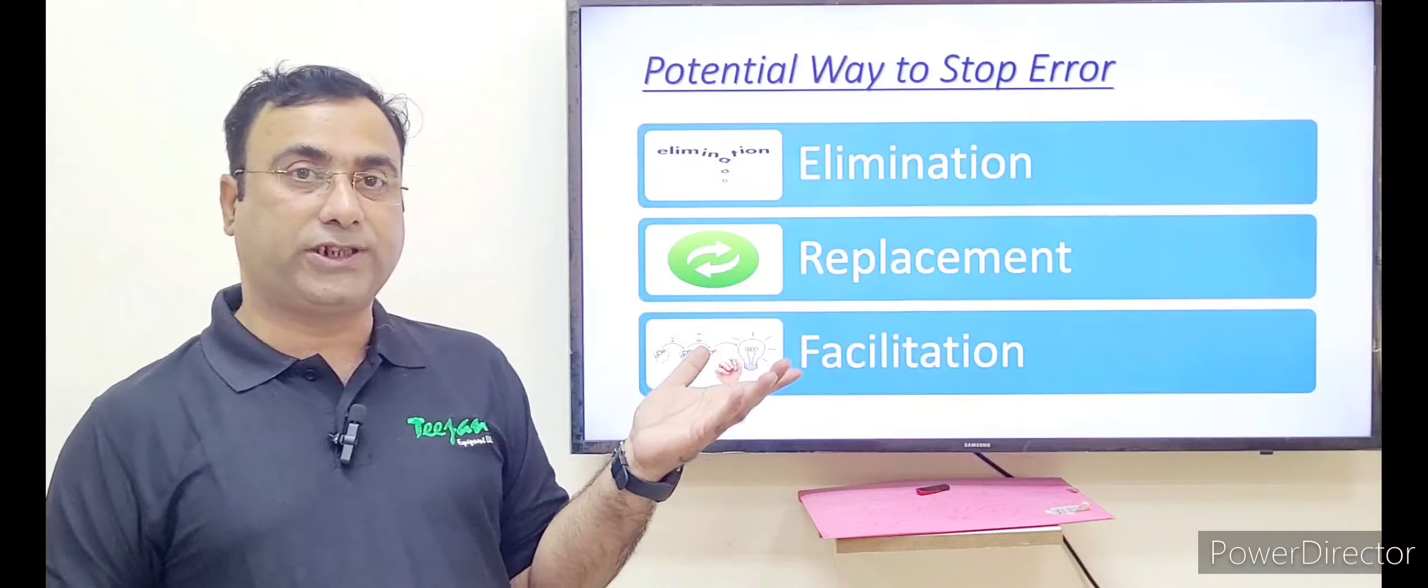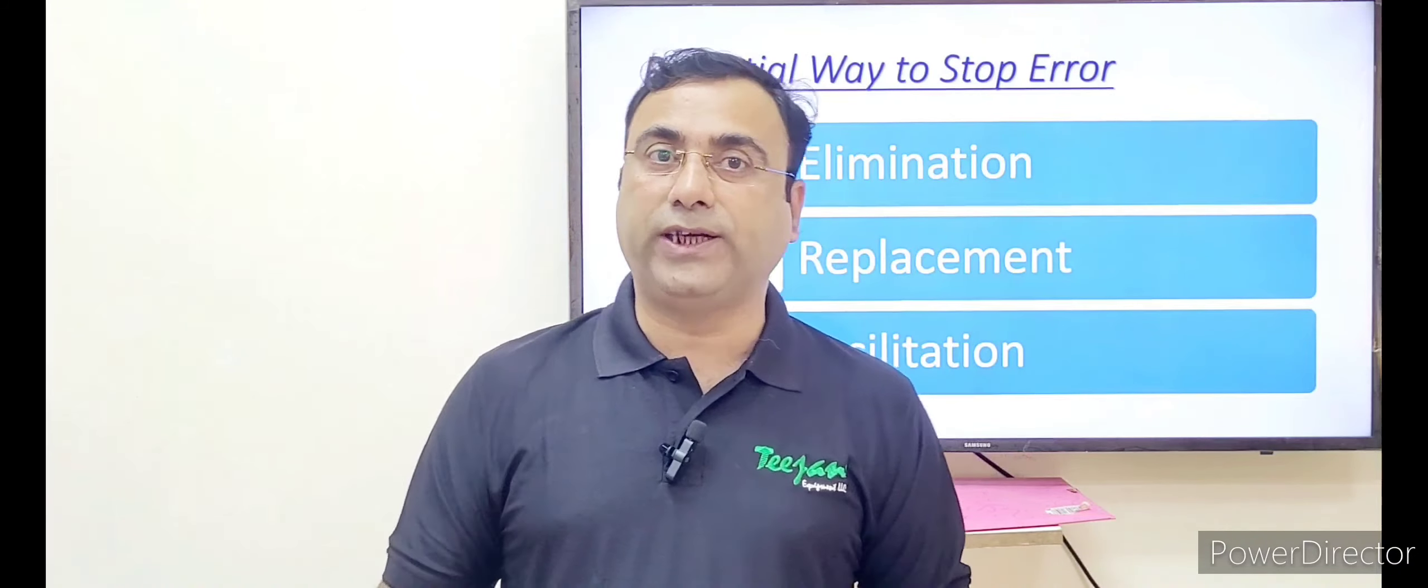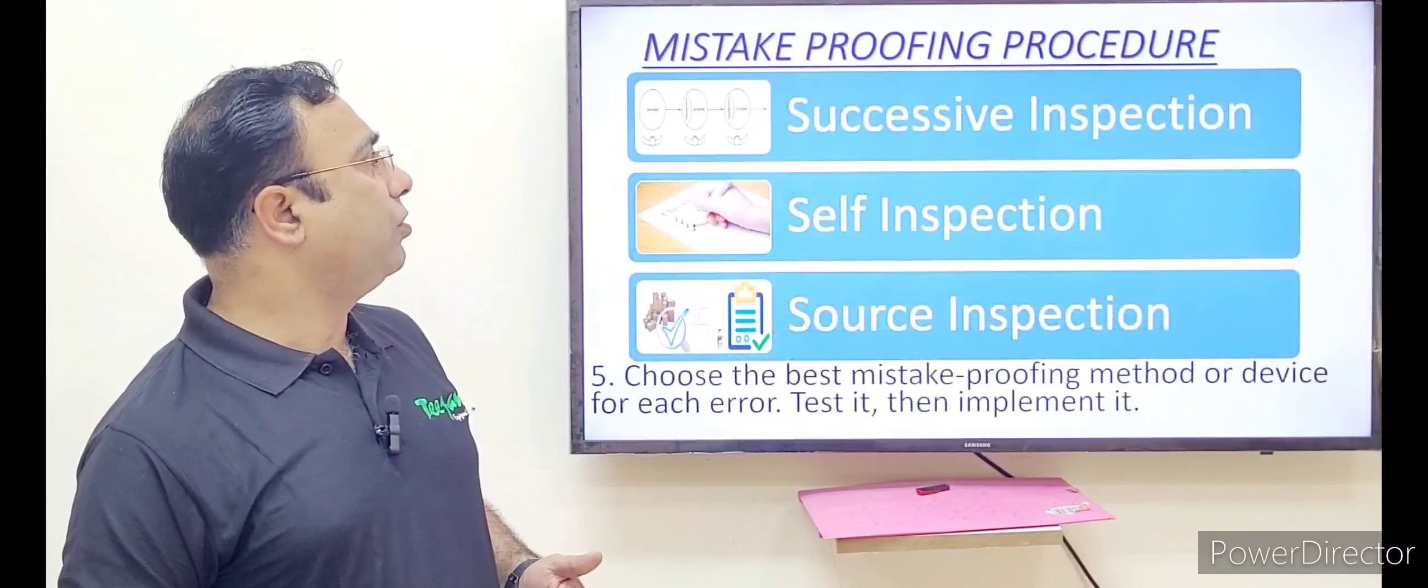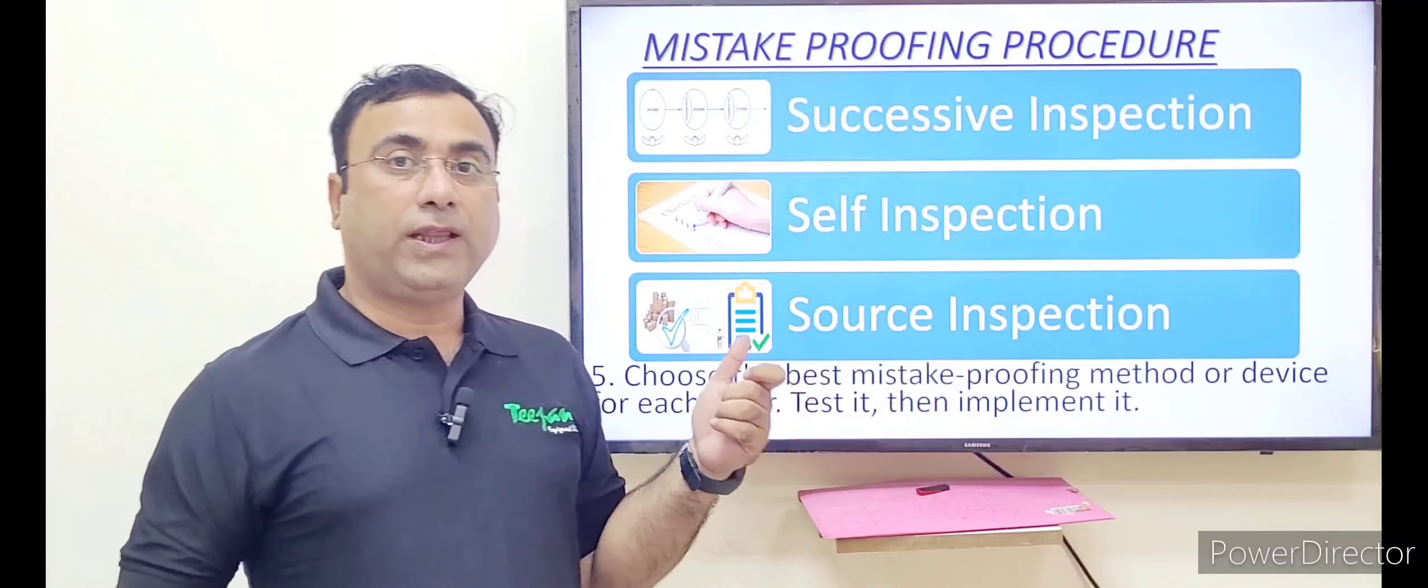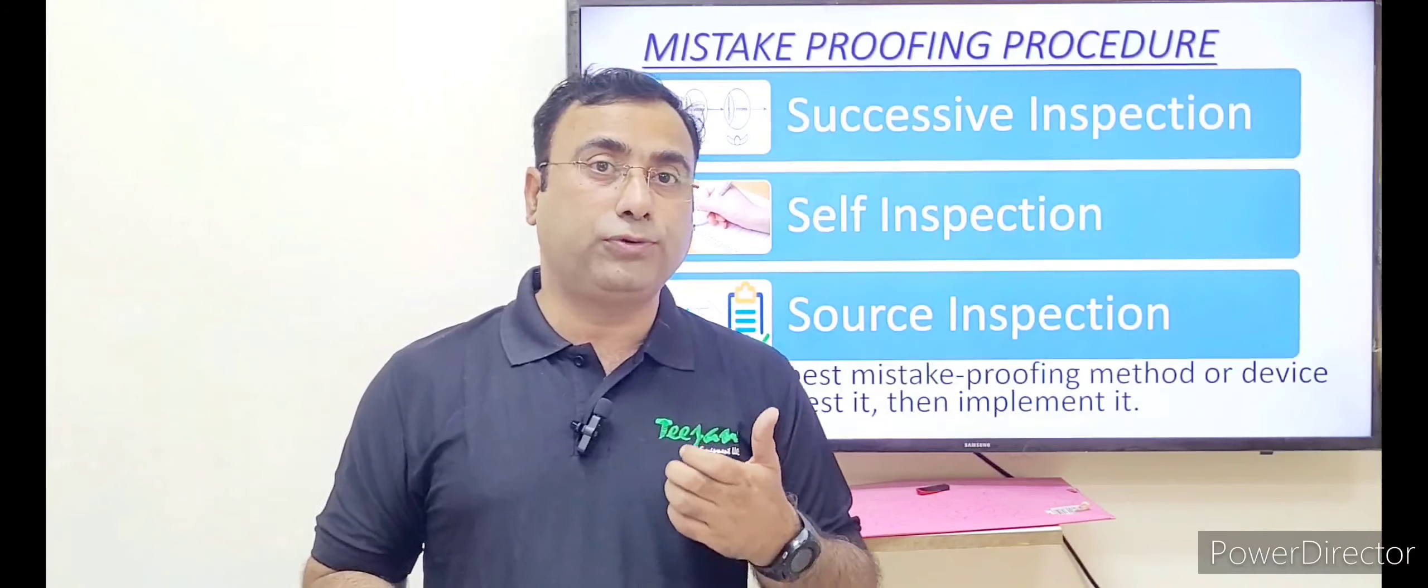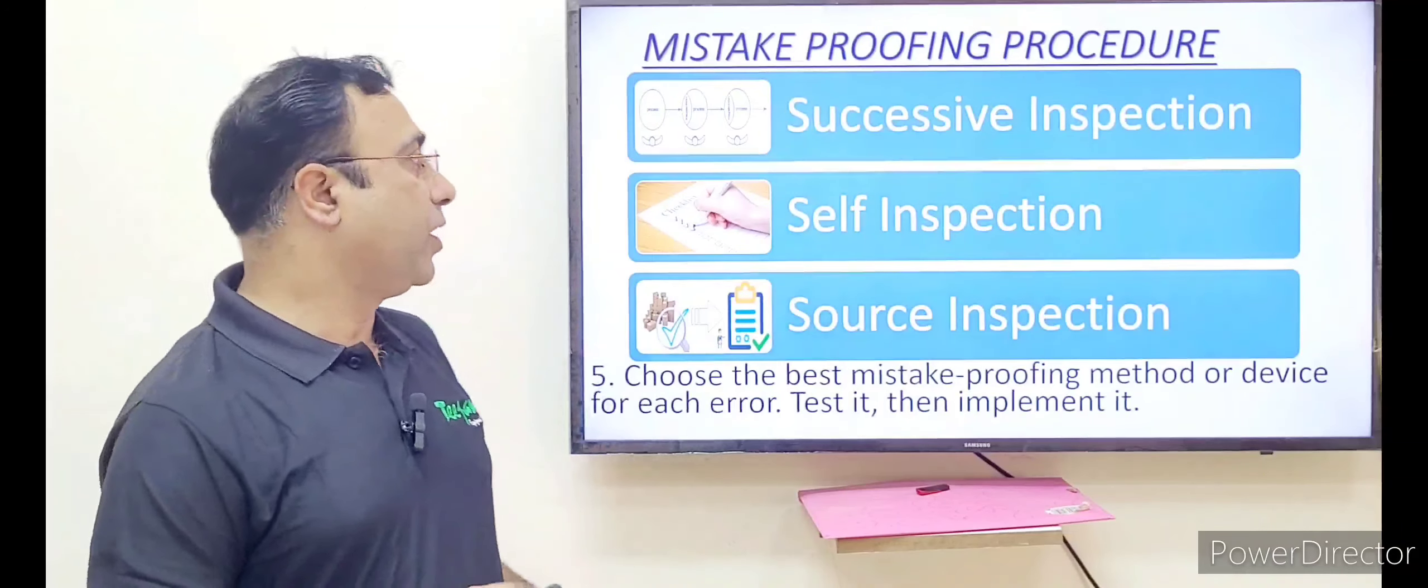Then the third one is facilitation. Sometimes you cannot remove a system, but you can put an additional equipment, additional person or additional resources to remove or minimize their impact. Then there is mistake proofing procedure, which is inspection. When you have identified that this we can do, then you have to do the inspection that how this is working and how it is minimizing or removing.